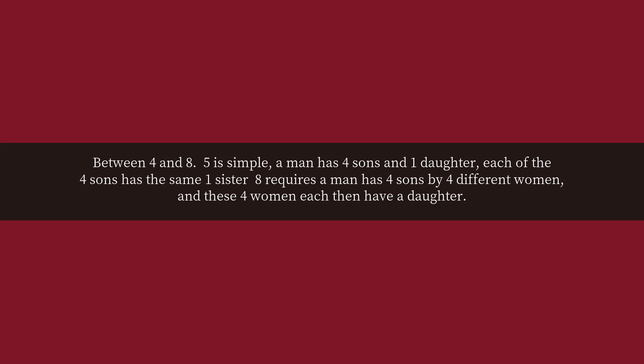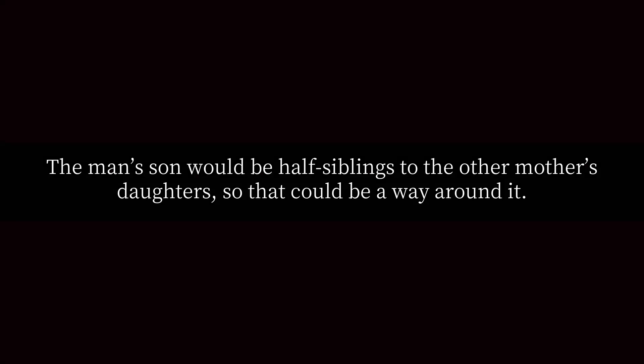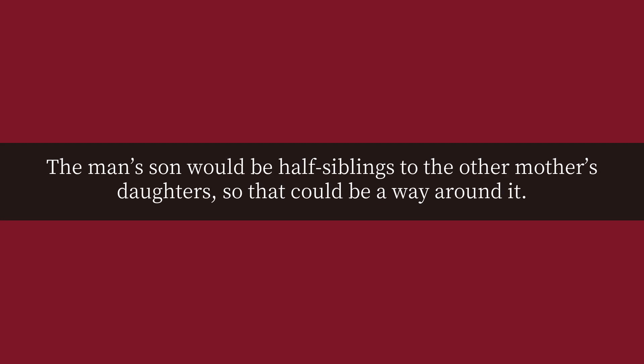Eight requires that a man has four sons by four different women, and these four women each then have a daughter. The man's sons would be half-siblings to the other mothers' daughters, so that could be a way around it.